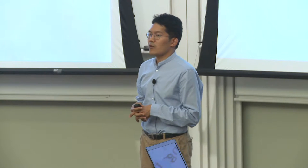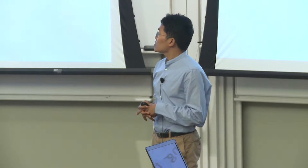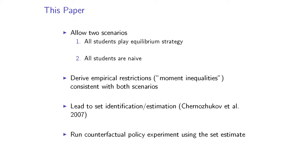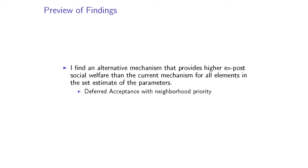This paper allows two scenarios. One is that all students play a perfect equilibrium strategy. In the other scenario, all students are naive in a particular sense I'll discuss. I derive empirical restrictions — called moment inequalities in this literature — that are consistent with both states of the world. These weak restrictions lead to partial identification and set estimation. With that set estimate, I run a counterfactual experiment. The finding is that I found an alternative mechanism providing higher ex-post social welfare than the current mechanism for all elements in the set estimate across all simulations — specifically, deferred acceptance with neighborhood priority.